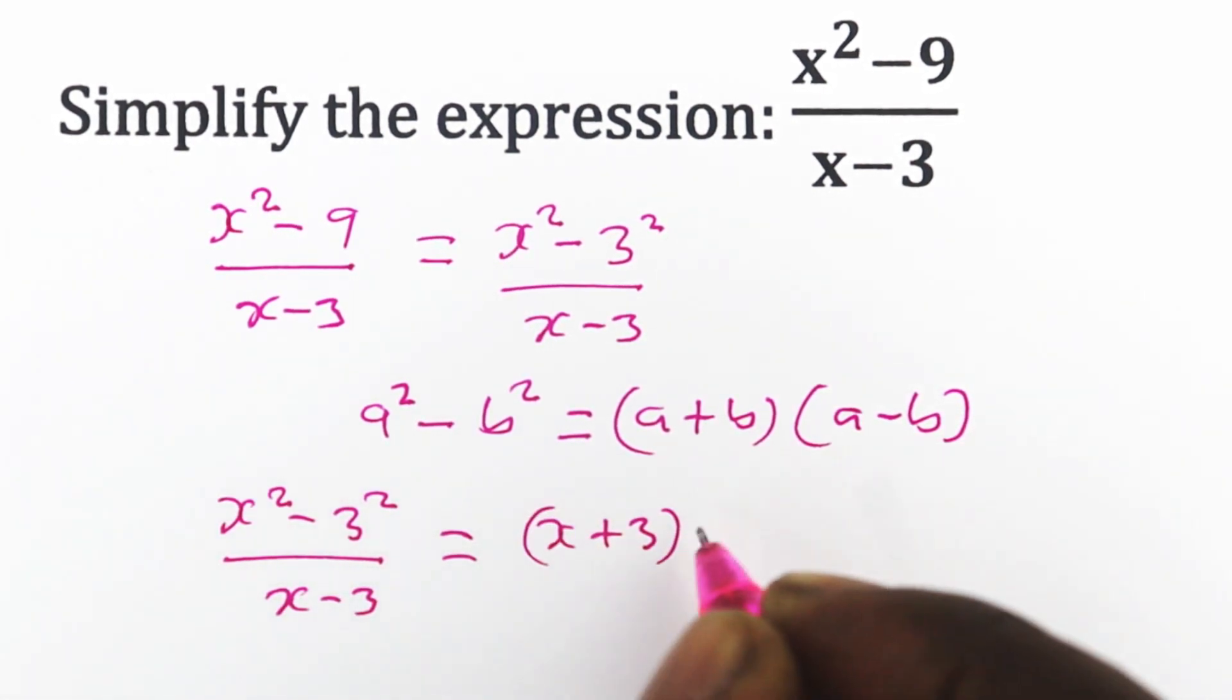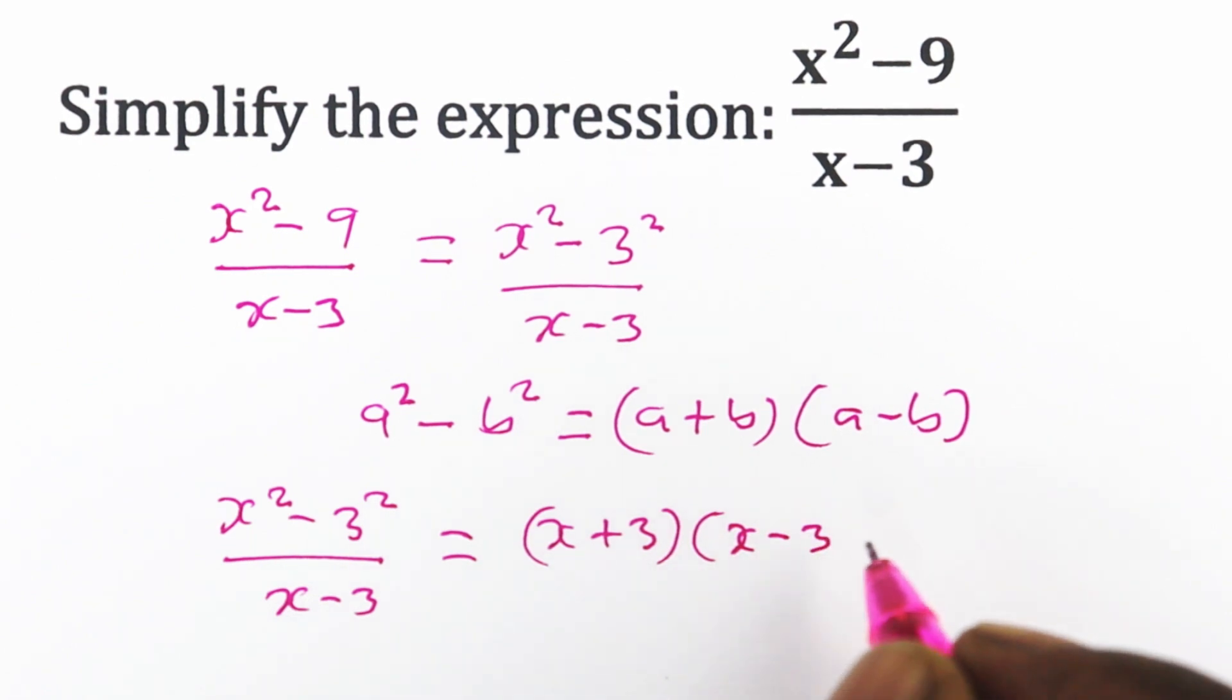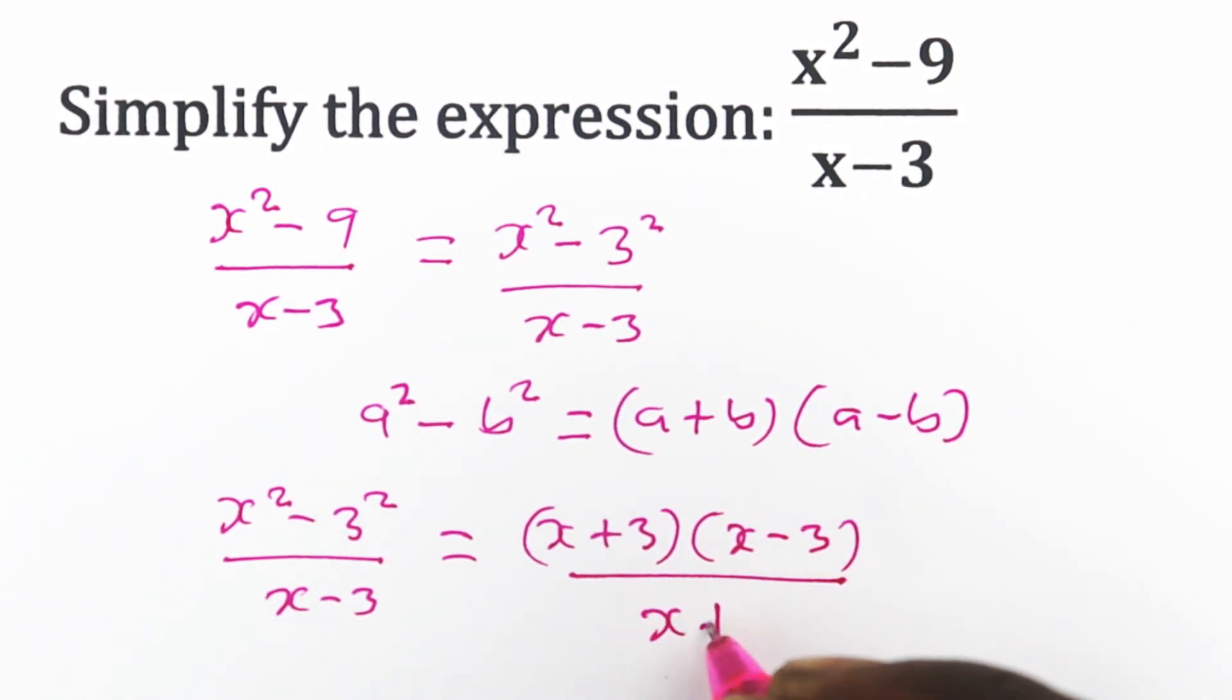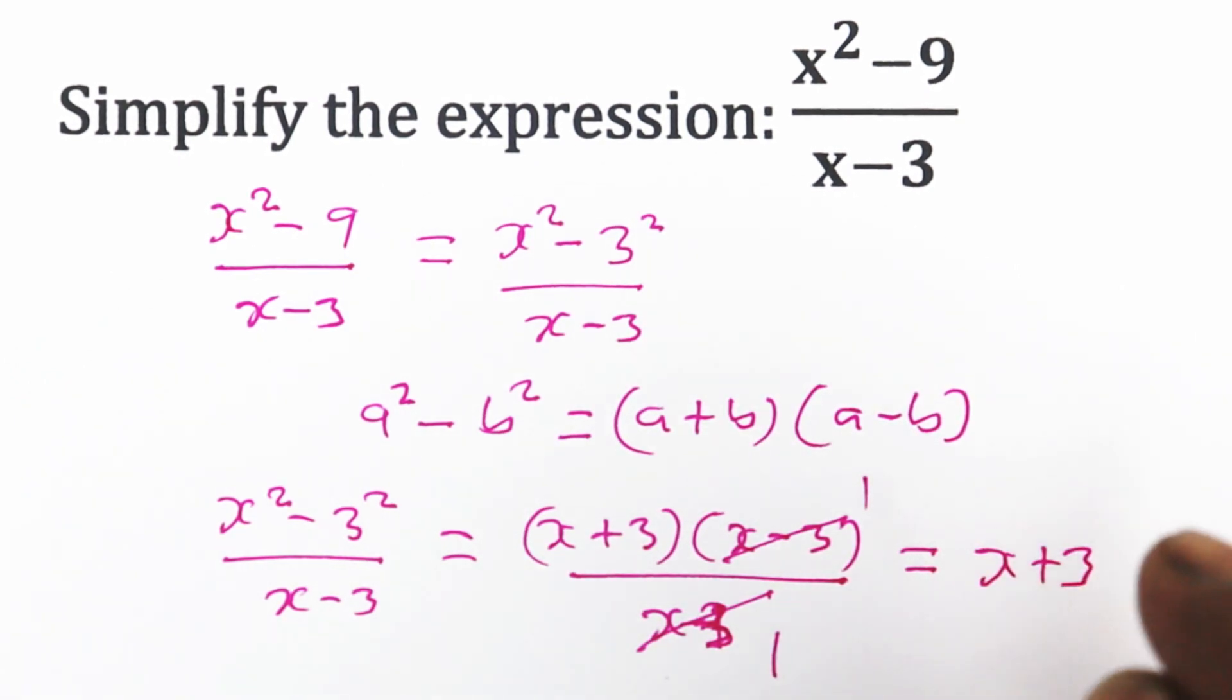plus 3 times x minus 3, and that is over x minus 3. So x minus 3 cancels out, and what we are left with is just x plus 3.